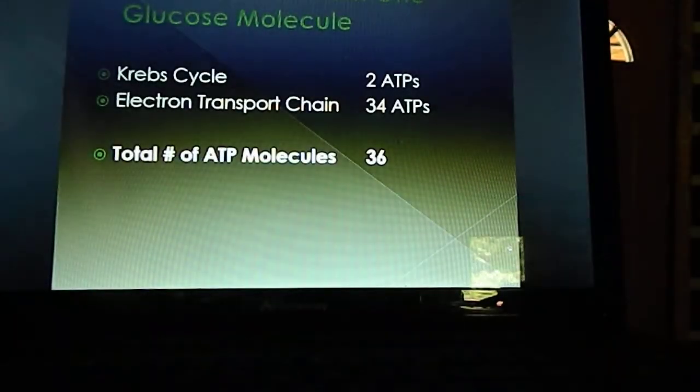If we look at ATP molecules from one glucose molecule, we get two in the Krebs cycle, we get 34 in the electron transport chain, and that gives us a grand total of 36 ATP molecules. As you can see, the electron transport chain is very efficient in taking that energy and converting it into ATP energy.